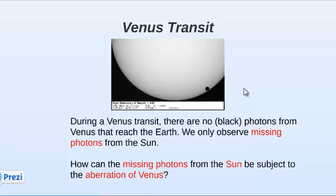Now, when there is such a transit, there are no photons emitted by Venus — there isn't such a thing as black photons. The only thing we see are photons from the Sun which are missing from the image. How can the missing photons from the Sun have become subject to the aberration of Venus?